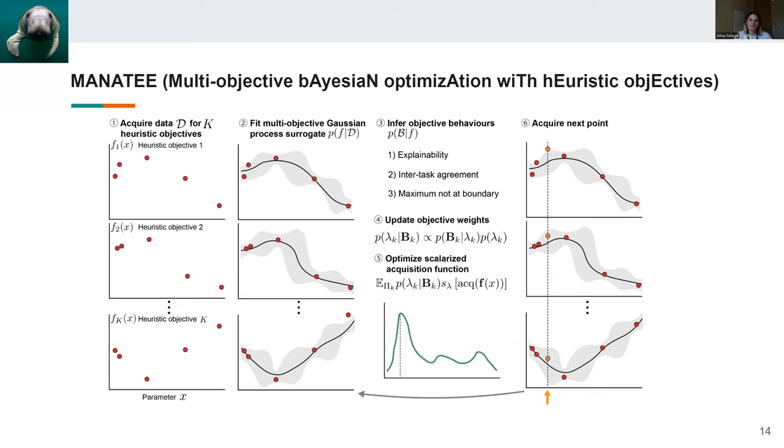In step four, we use these distributions over the objective behaviors to update the objective weights or the posterior probabilities of an objective being useful given its behaviors.